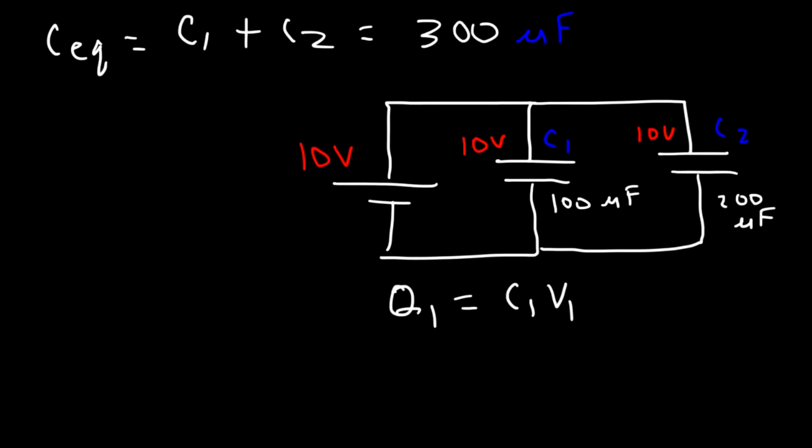So V1 is 10 and V2 is 10. Now we can calculate Q1. It's going to be C1, which is 100 microfarads, or 100 times 10 to the minus 6. Micro is 10 to the minus 6, and V1 is just 10. So Q1 is about 0.001 coulombs. That's the unit of electric charge.